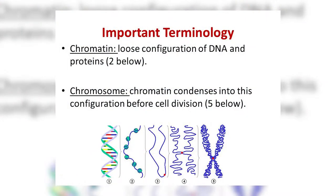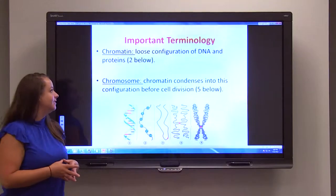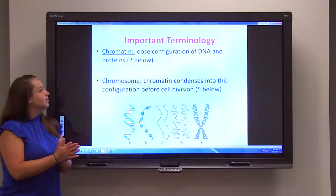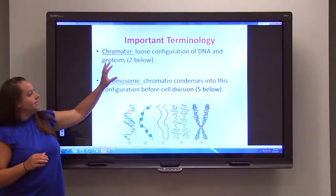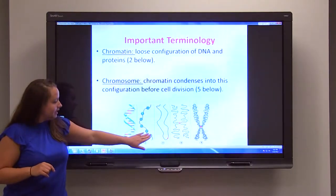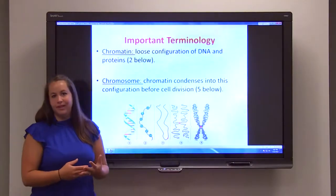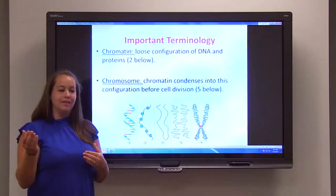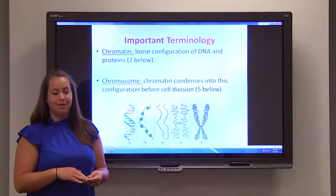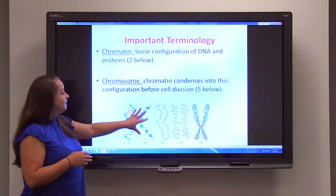Before we get started with mitosis, there are a couple of terms we need to go over because they're going to come back throughout this lecture and the future lecture about meiosis. The first one is chromatin — it's a loose configuration of DNA. You can see in this illustration where the DNA is wrapped around the proteins. This is how DNA is stored in everyday life, where it needs to be accessible so that you can make new proteins and repair structures.